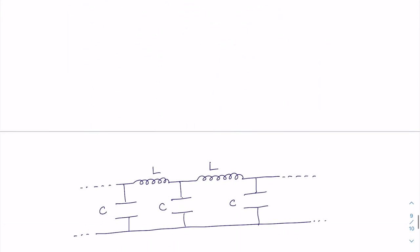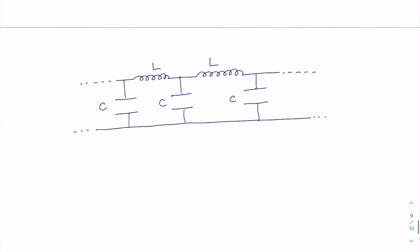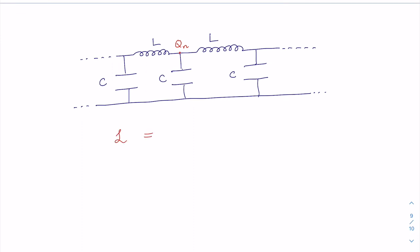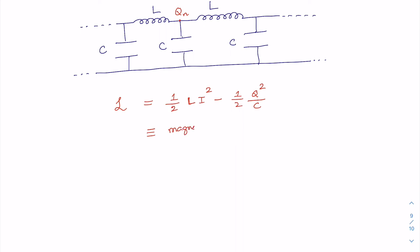Going back to our transmission line, let us propose Q_n (charge) as our coordinate and see what happens. The Lagrangian for the basic unit cell of the transmission line — the LC circuit — is written as: L equals (1/2) L I² minus Q²/(2C), or equivalently (1/2) L Q-dot² minus Q²/(2C). The first term is the magnetic energy term and the second is the electrical energy or charging energy term. We need to write down the charging energy and magnetic energy for the full transmission line.